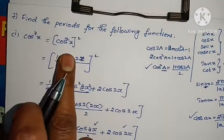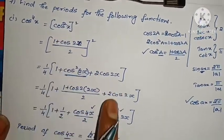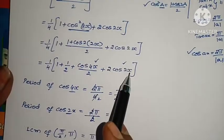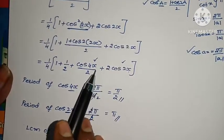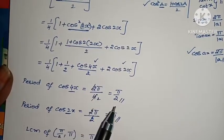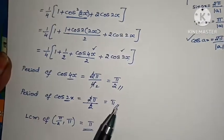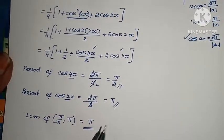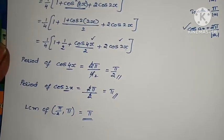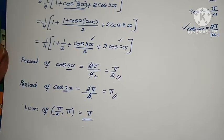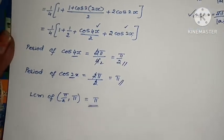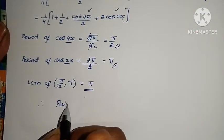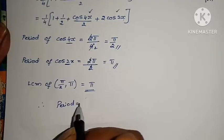This problem is complete. cos4x has period π/2 and cos2x has period π. LCM of π/2 and π is π. So period = π.